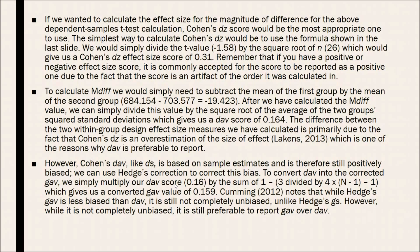Now as we discussed, Cohen's DAV, like DS, is based on sample estimates, and is therefore still positively biased. So we can use Hedges' correction to correct this bias, and to convert DAV into the corrected GAV, we simply multiply our DAV score, which is 0.16, by the sum of 1 minus 3 divided by 4 times the total sample size minus 1 minus 1. It ends up giving us a converted GAV value of 0.59, which is really not that different. But the larger your sample size gets, the more difference it will make. Cumming notes that while Hedges' GAV is less biased than DAV, it is still not completely unbiased, unlike the Hedges' GS. However, while it's not completely unbiased, it is still preferable to report GAV over DAV.